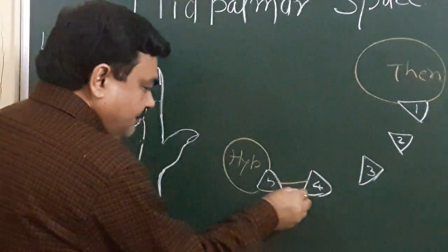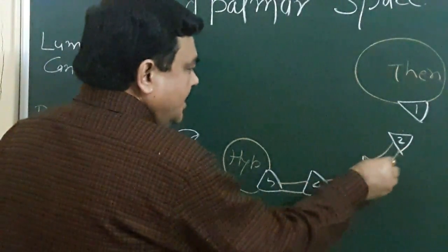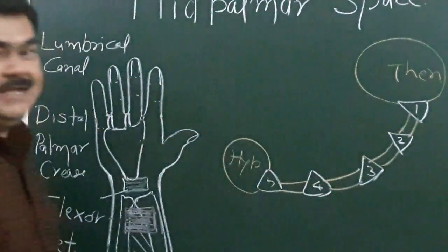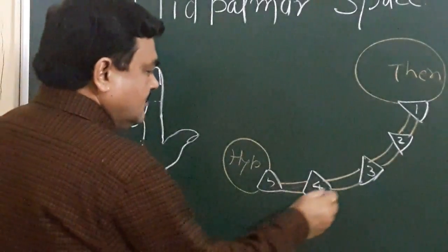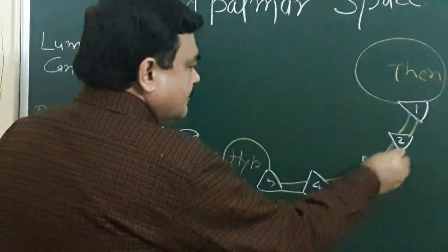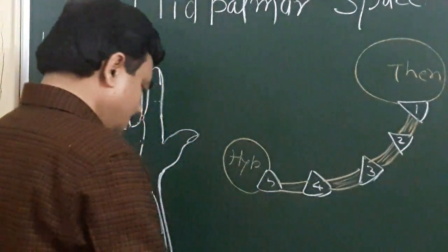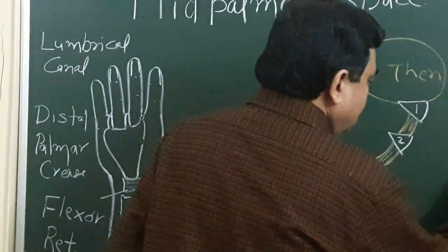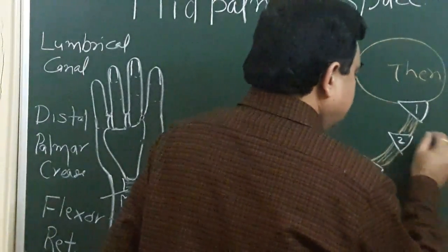This is the fourth dorsal interosseous, this is the third, this is the second, and this is the first dorsal interosseous.